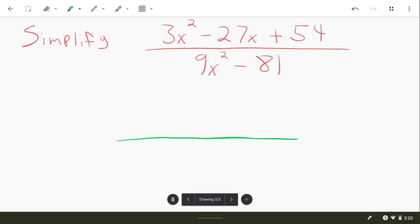So on the bottom, they have a 3 in common, but they also have a 9 in common. So we're going to factor out a 9. That's going to become an x squared, and then 9 times 9 will give us 81.